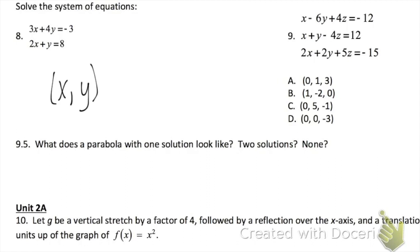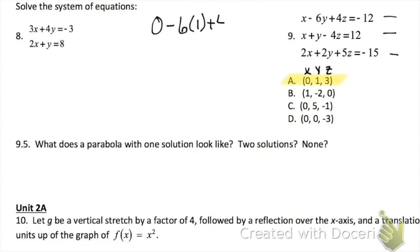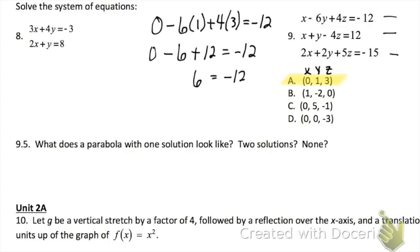Problem 9 was the three-variable systems we did on a whole sheet of paper. Since our final is multiple choice, I'm going to teach you how to use the answers. Plug each answer in — start with answer A, plugging 0 for X, 1 for Y, and 3 for Z in all three equations. If you get true statements, that's your answer. We get 0 minus 6 plus 12, which is positive 6 — that does not equal 12, so A is not the answer. Try B, C, and D. Whichever answer it is has to work in all three equations.